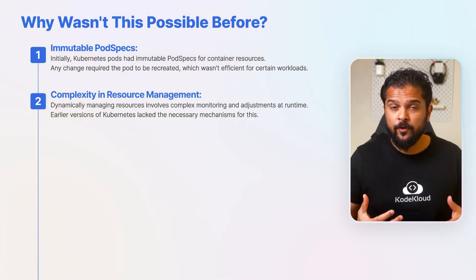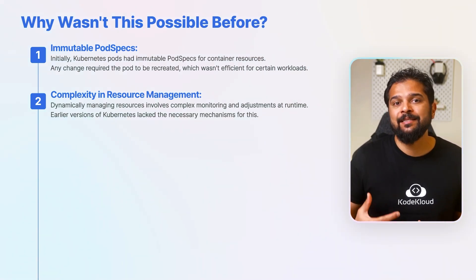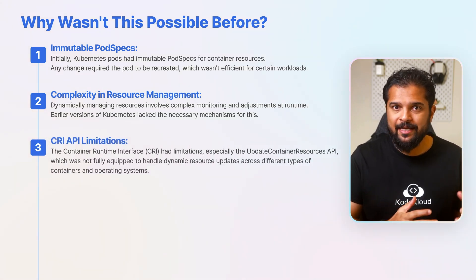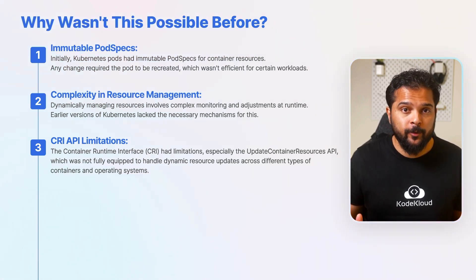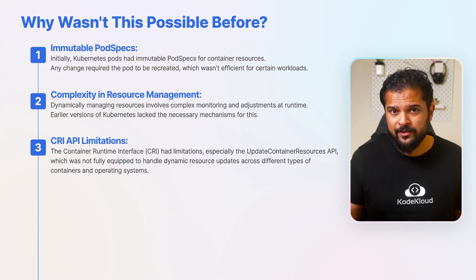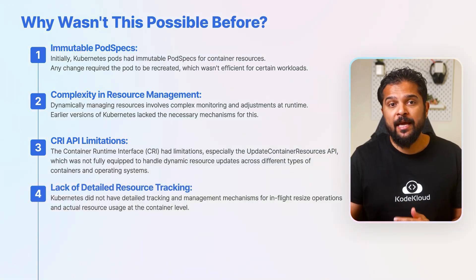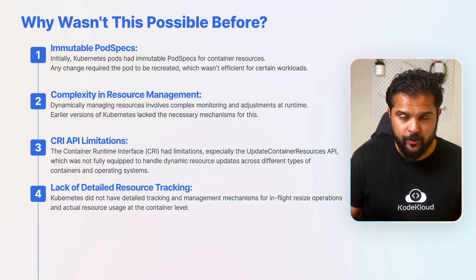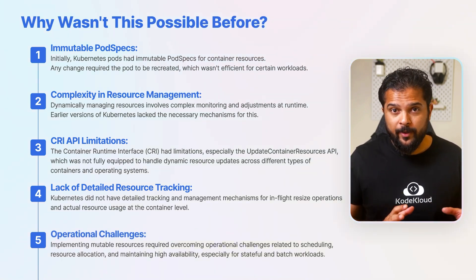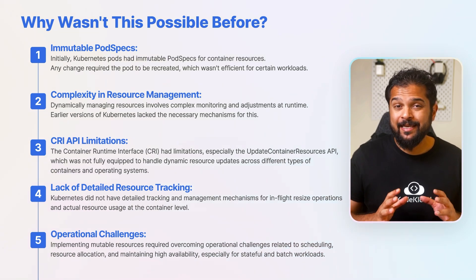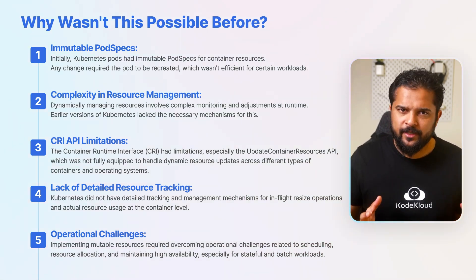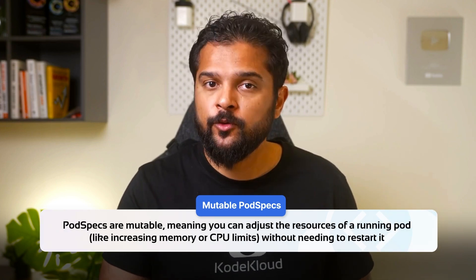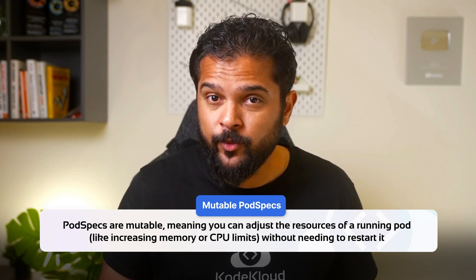Dynamically managing resources involves complex monitoring and adjustments at runtime, and early versions of Kubernetes lacked the necessary mechanisms for this. The update container resources API was not fully equipped to handle dynamic resource updates across different container types and operating systems, and Kubernetes lacked detailed tracking for in-flight resize operations and actual resource usage at the container level. Implementing mutable resources required overcoming operational challenges related to scheduling, resource allocation, and maintaining high availability for stateful and batch workloads. Now, pod specs are mutable, meaning you can adjust the resources of a running pod — like increasing memory or CPU limits — without needing to restart it, making resource management much more flexible.